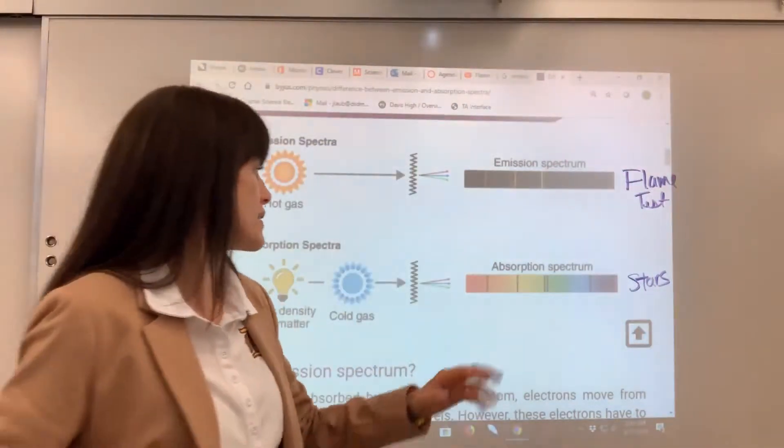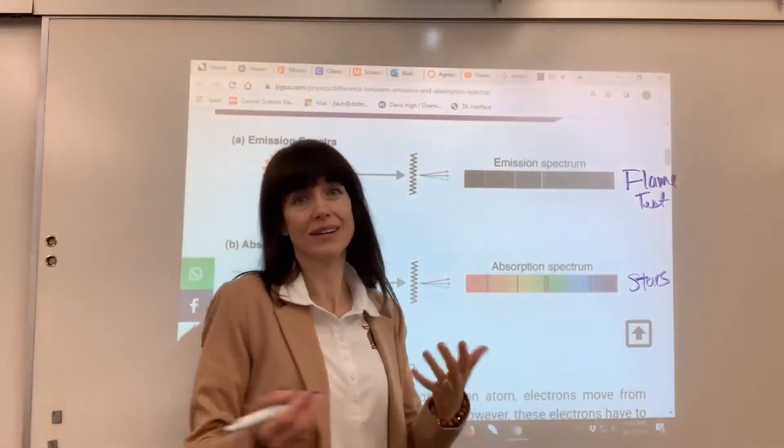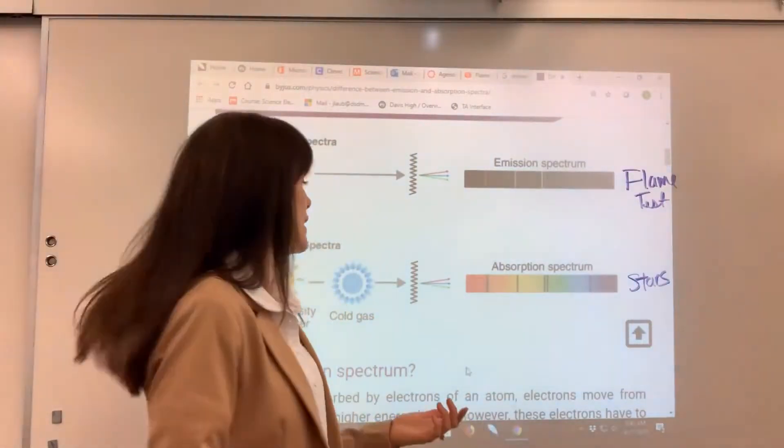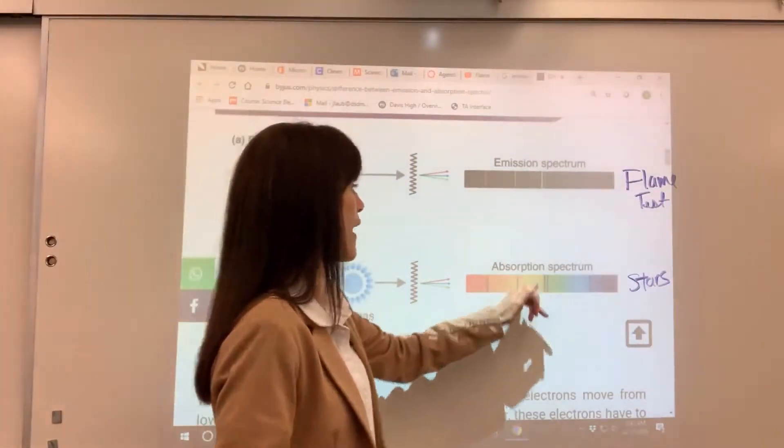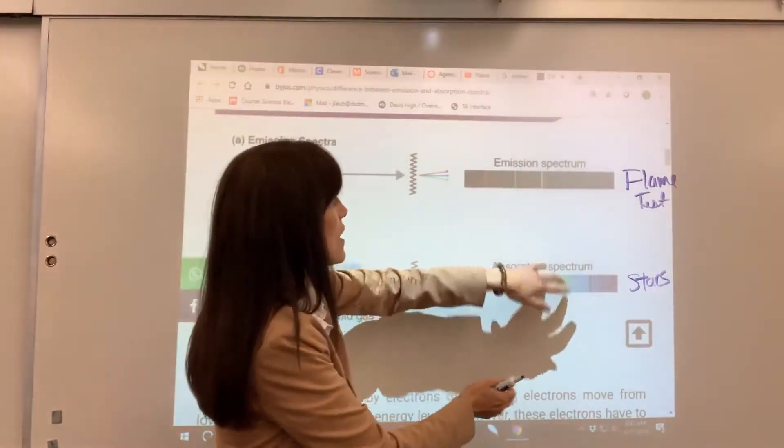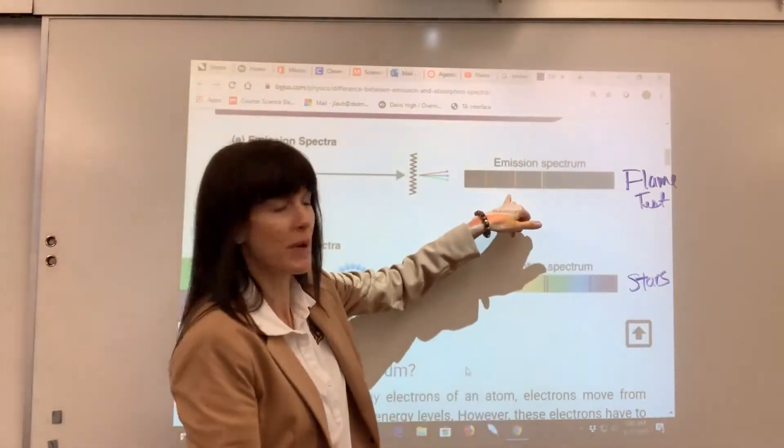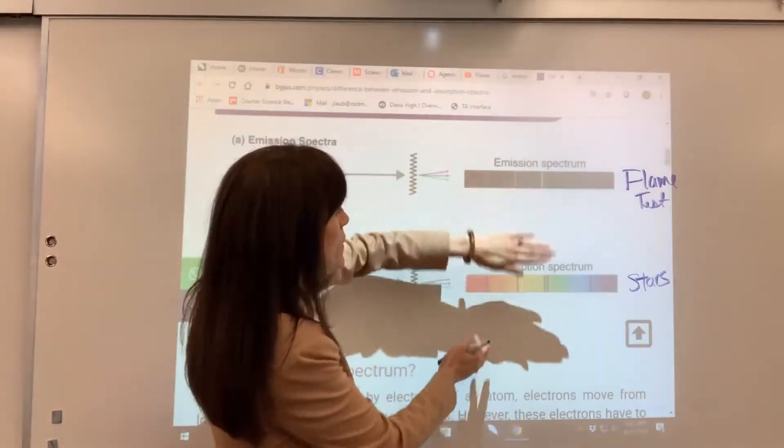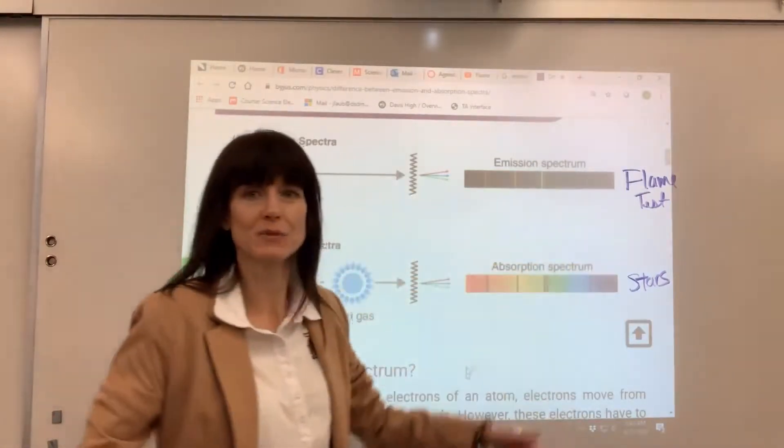So when we look into space, we will look at a star. For instance, we'll look at the sun, and we will observe black lines. What we can do is compare those black lines to our emission spectra. And notice if I superimpose this, it would fill in those black lines perfectly.